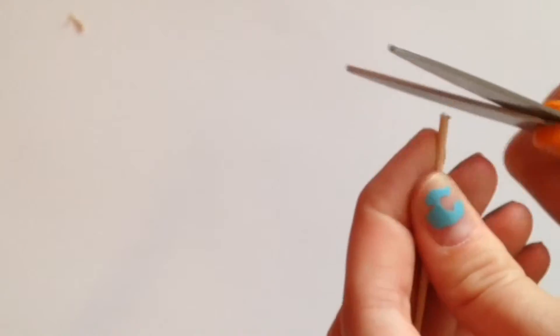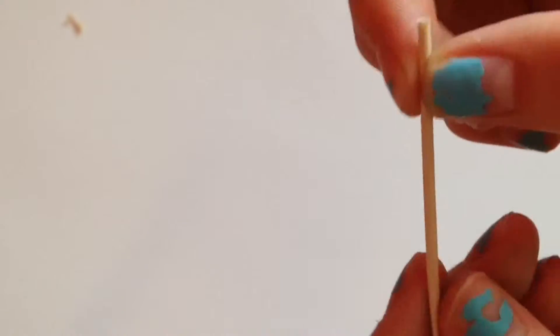So you're going to start off by cutting one tip of the toothpick so it looks like an eraser.